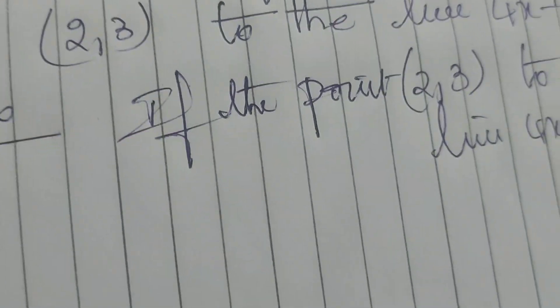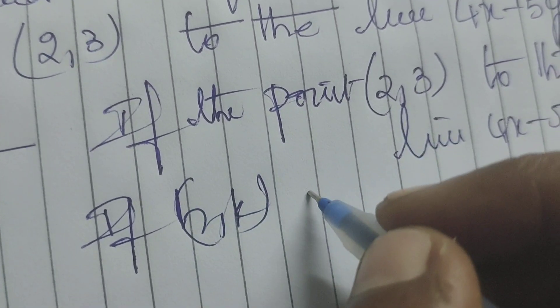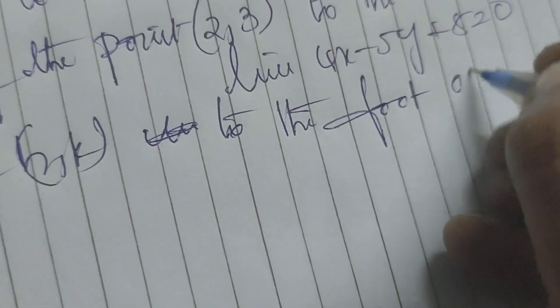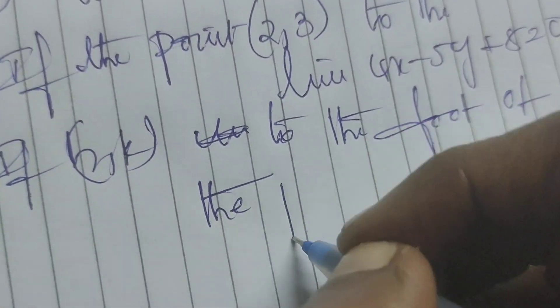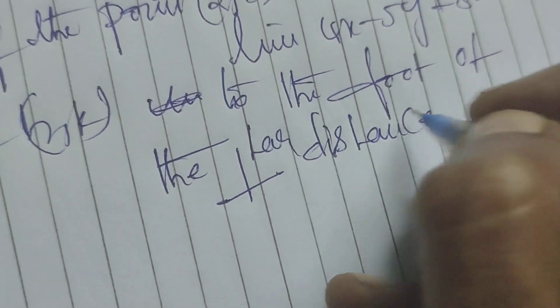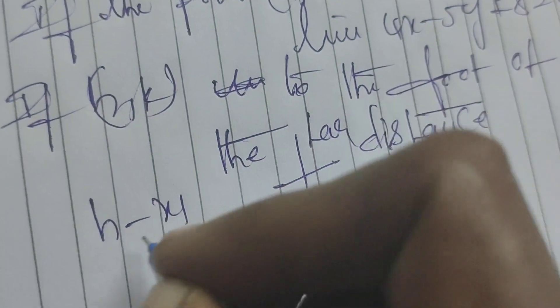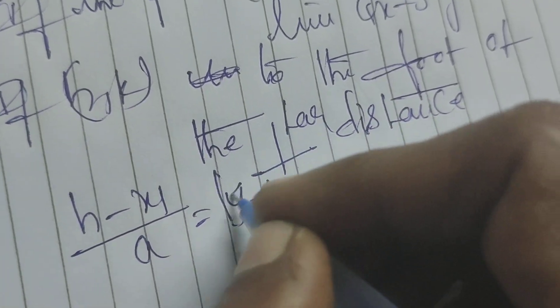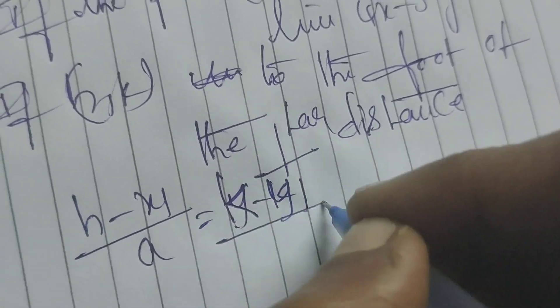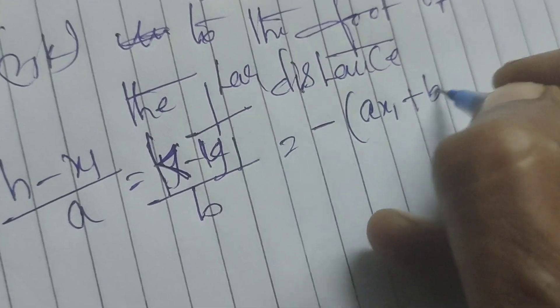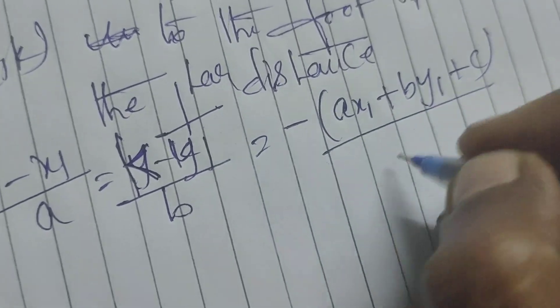We know that by the standard formula, if the point is (h, k), the foot of the perpendicular is given by: h minus x1 by a equals to k minus y1 by b equals to minus of (ax1 plus by1 plus c) by (a squared plus b squared).